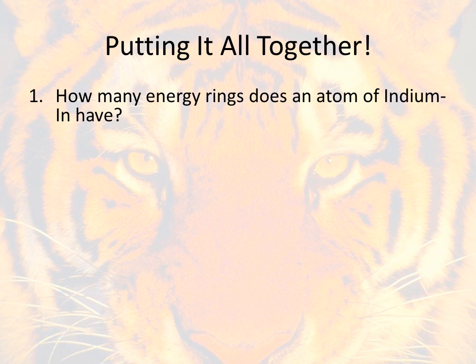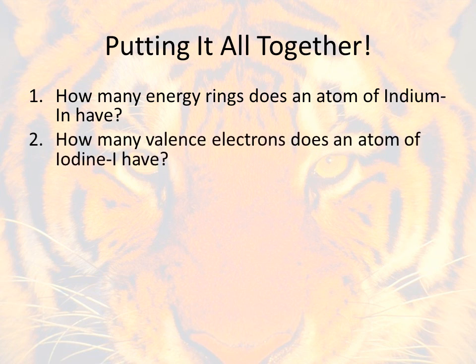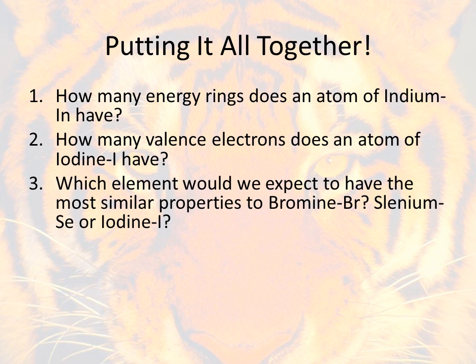Alright, so question 1, and you do not need to write the question, just go ahead and write your answer. Question 1 is how many energy rings does an atom of indium have? And to help you find indium, the symbol is IN. Pause if you need more time. The second question is how many valence electrons does an atom of iodine have? To help you find iodine, the symbol is I.